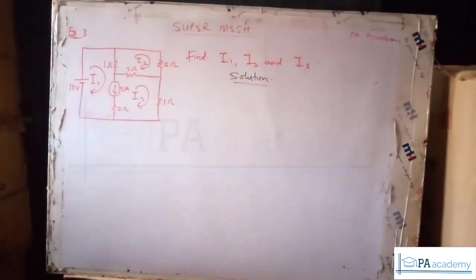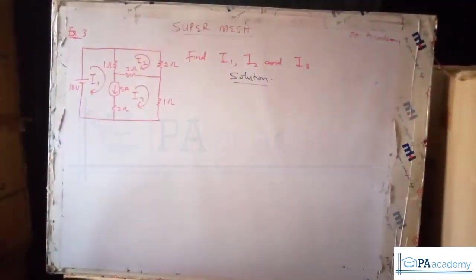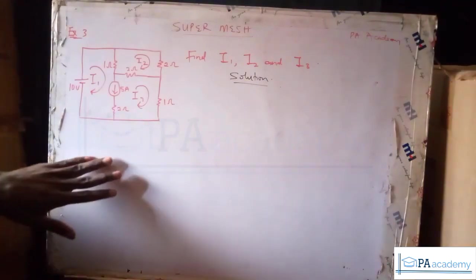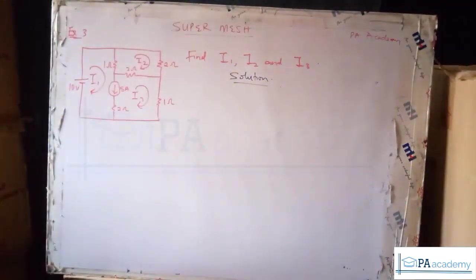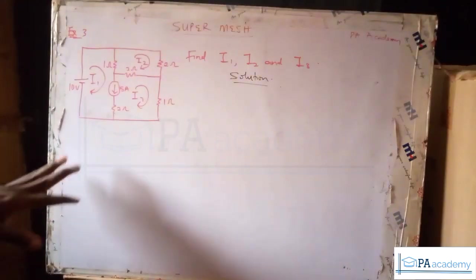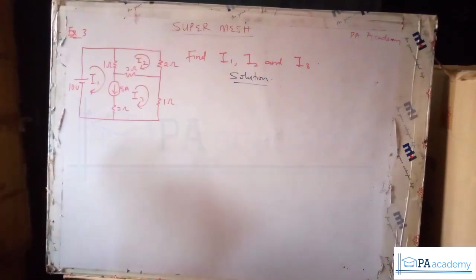Hello and welcome back to PA Academy. We are still looking at super mesh, and this is example three. In this example, we have a circuit and we are asked to find i1, i2, and i3. This example looks similar to the one we looked at in example two, but there's a little tweak.